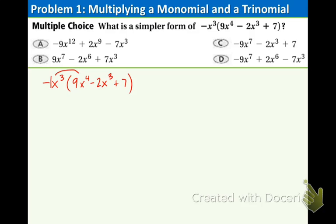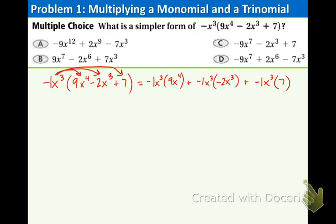We are distributing that term in front, so draw 3 arrows this time because there are 3 terms. Now let's set it up: negative 1x to the 3rd times 9x to the 4th, plus negative 1x to the 3rd times negative 2x to the 3rd, plus negative 1x to the 3rd times 7. There's our setup.